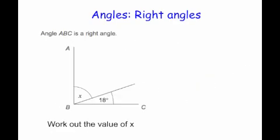Let's have a look at a typical exam question. Angle ABC is a right angle, so that means it is 90 degrees. It says work out the value of X. We're given 18 degrees and we need to work out the remaining part of the right angle.